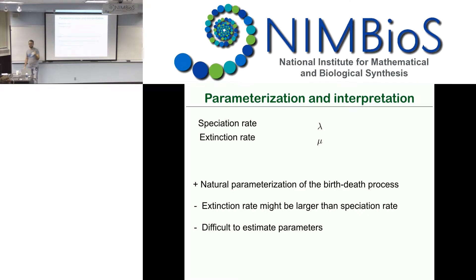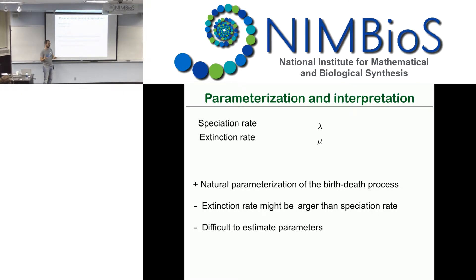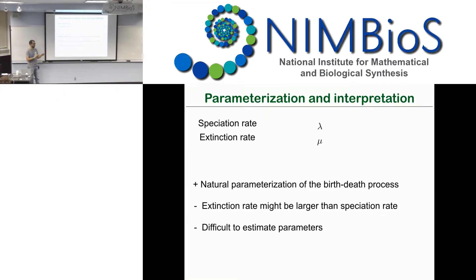Additionally, using speciation and extinction rates directly makes it difficult to get good mixing in your MCMC analysis, because the speciation and extinction rates are very highly correlated. If you move to a larger speciation rate, you also want a larger extinction rate, and you want to jointly update those. But they're not perfectly correlated with a simple linear relationship, so by experience you tend to have problems with MCMC convergence.